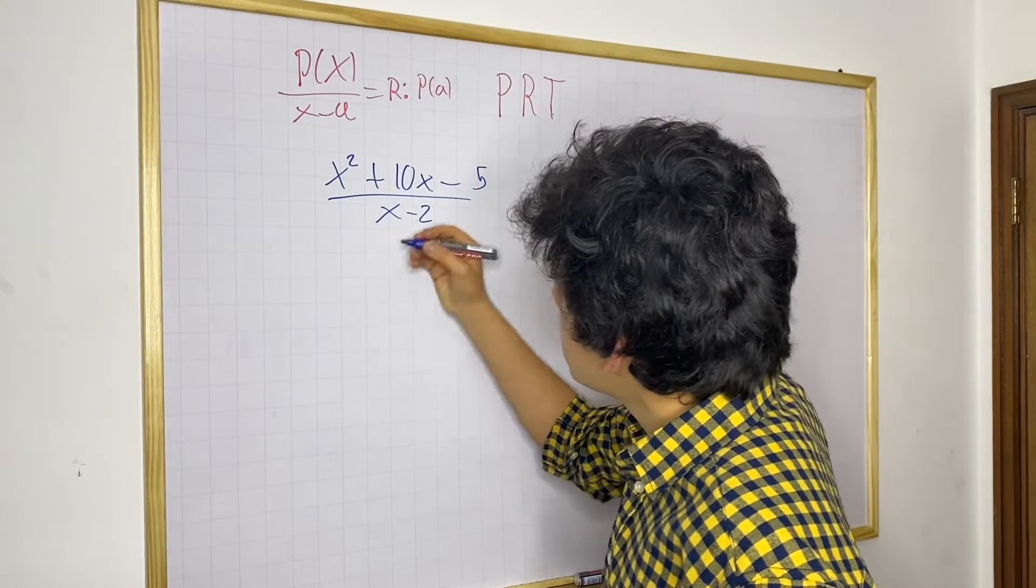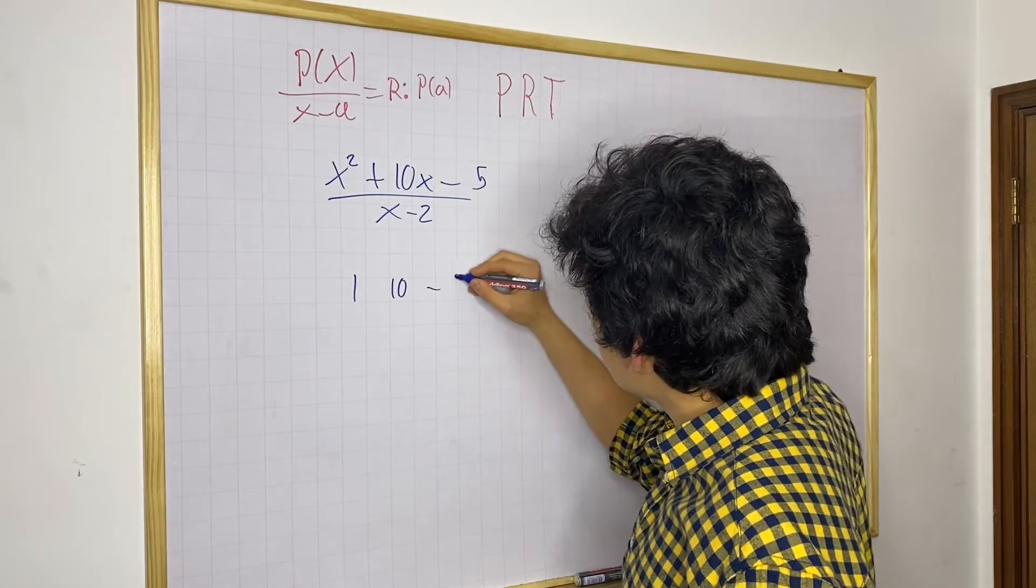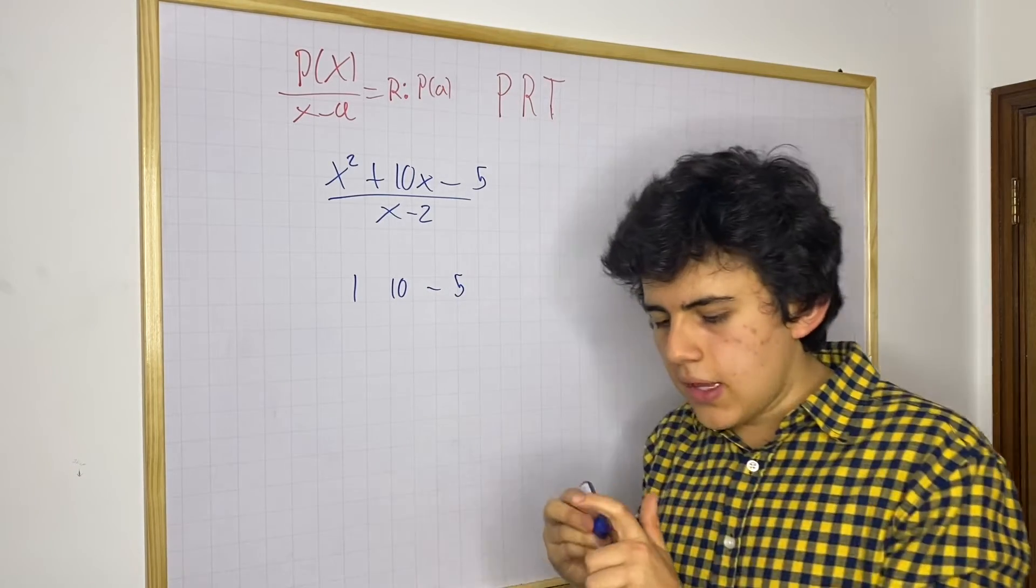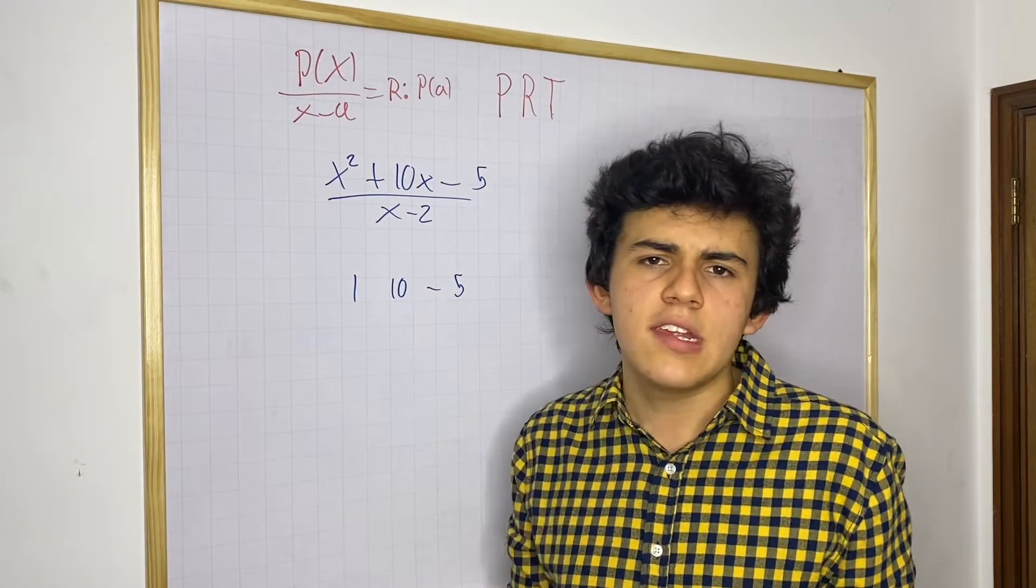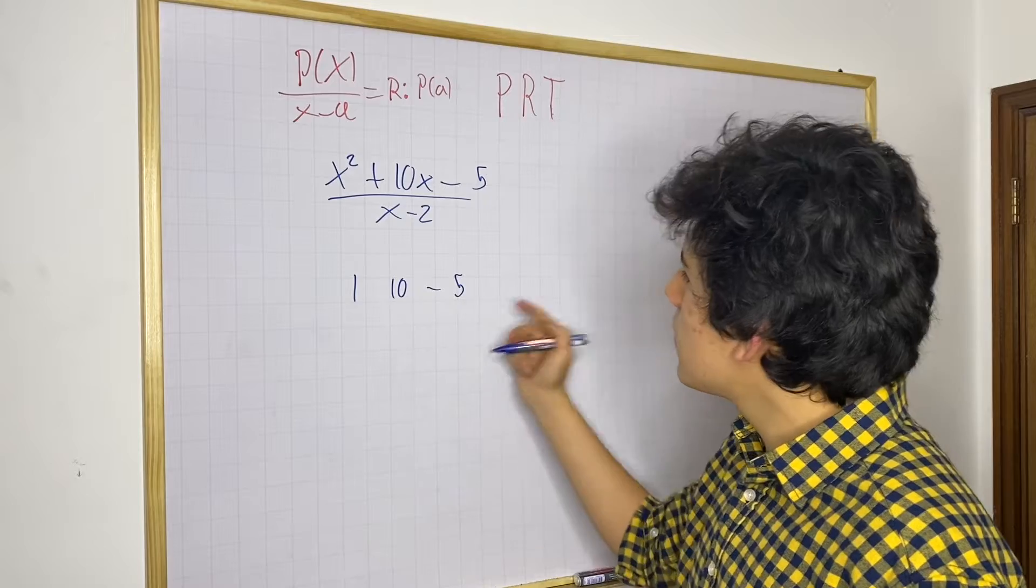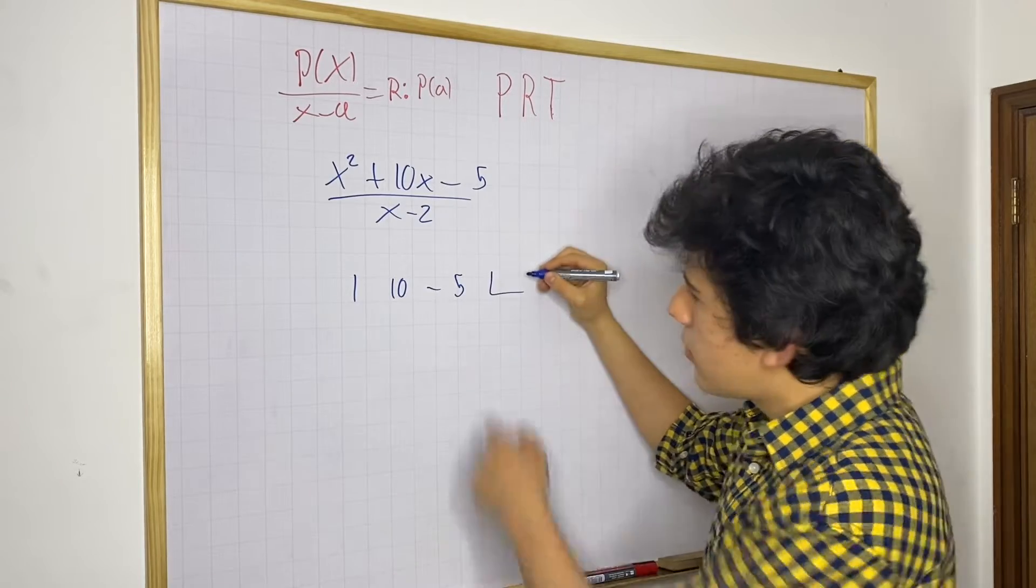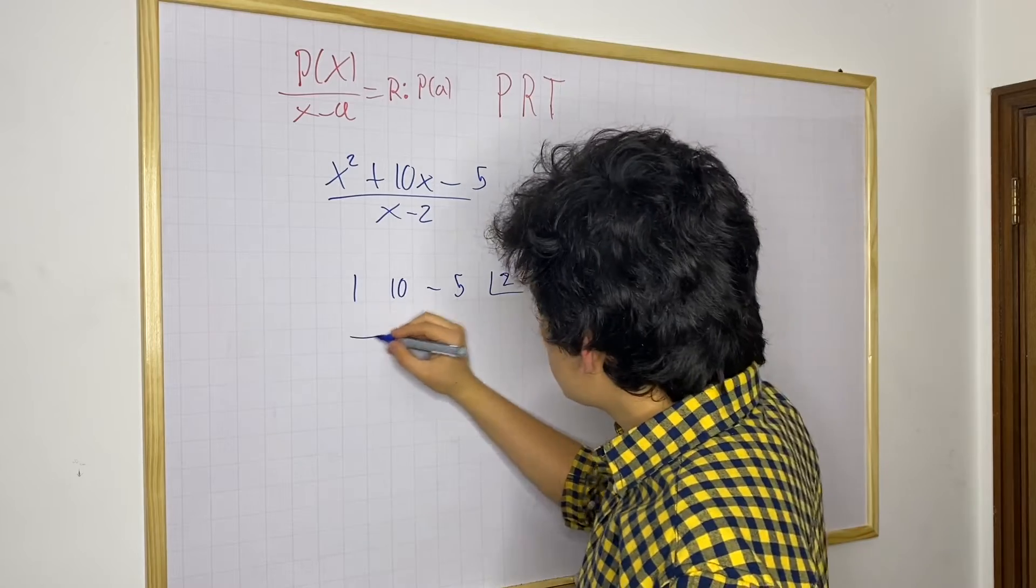Using synthetic division, just playing with the coefficients, we have 1, 10, and minus 5. If you don't know synthetic division, you can go and check my last video, I explained very easily what all this is. So we have minus 5, and we're going to divide by, we're going to switch the sign, so we get 2, and then you know how it goes.